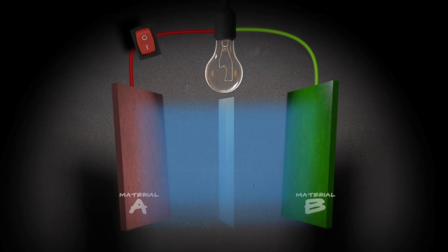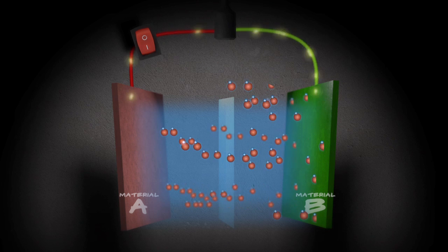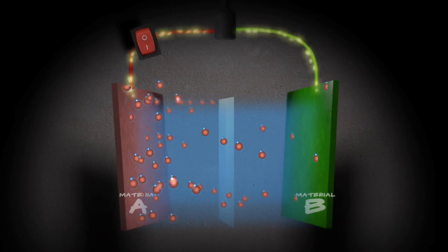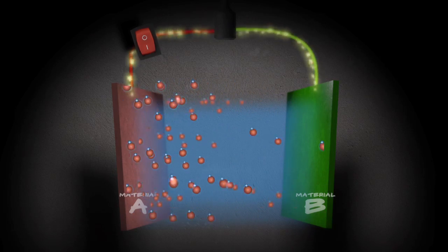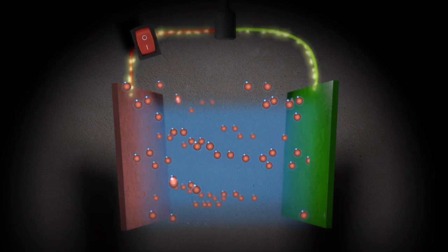To recharge the battery, you just do things in reverse. Instead of a circuit, you're putting in energy that forces the electrons back into material A. The ions then leave material B and rejoin their lost electrons. And the battery is ready to discharge again.